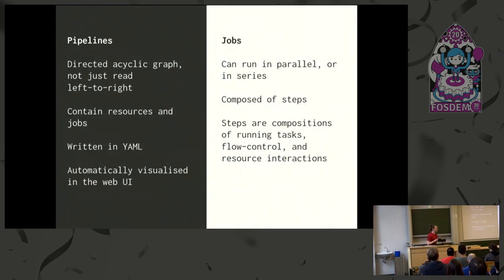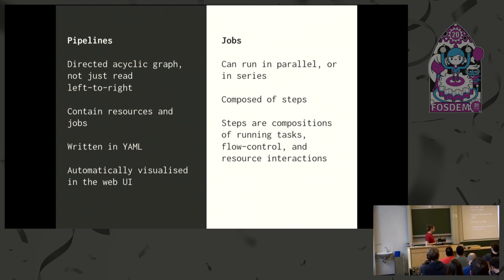Concourse doesn't think of a pipeline as "when this is triggered this pipeline runs." A pipeline is a directed acyclic graph — a bunch of nodes and edges. You don't just read it left to right because smaller parts of the pipeline can trigger whenever they want. A pipeline is written in YAML and applied using the fly CLI tool. Concourse automatically generates a web UI so you can see what your pipeline looks like.